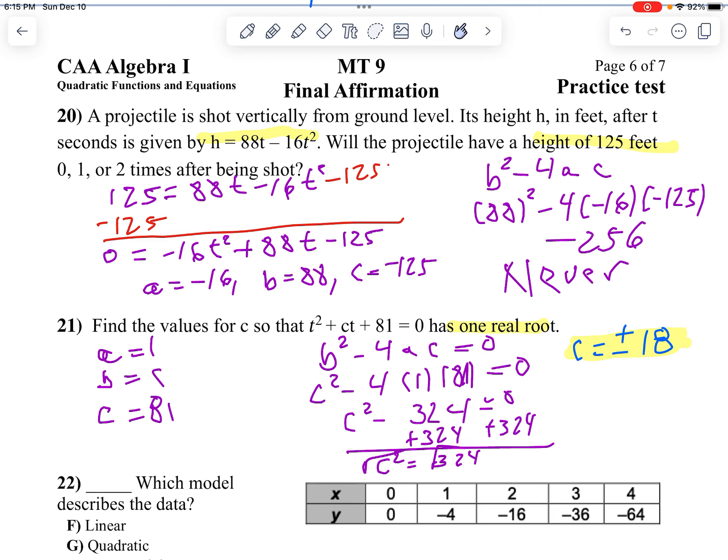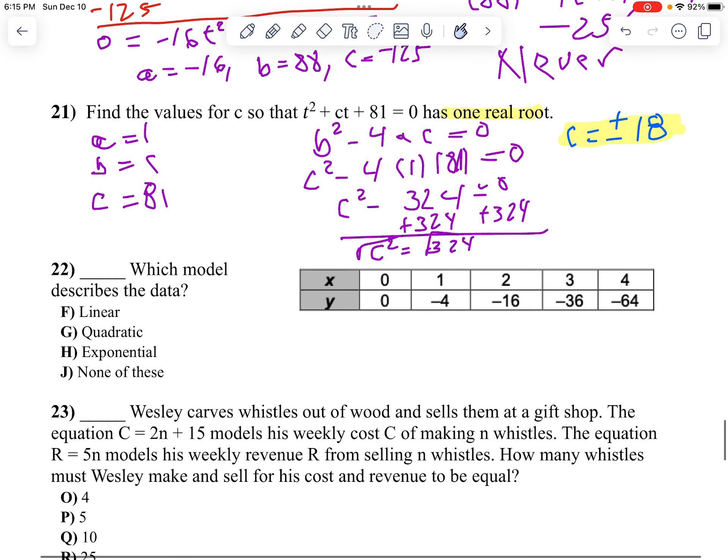Okay, now let's take a look at number 22. Notice they're asking which model it is. And notice y has a 0. I can't multiply 0 by anything to get 4. So automatically, I'm going to cross out exponential. That one does not work.